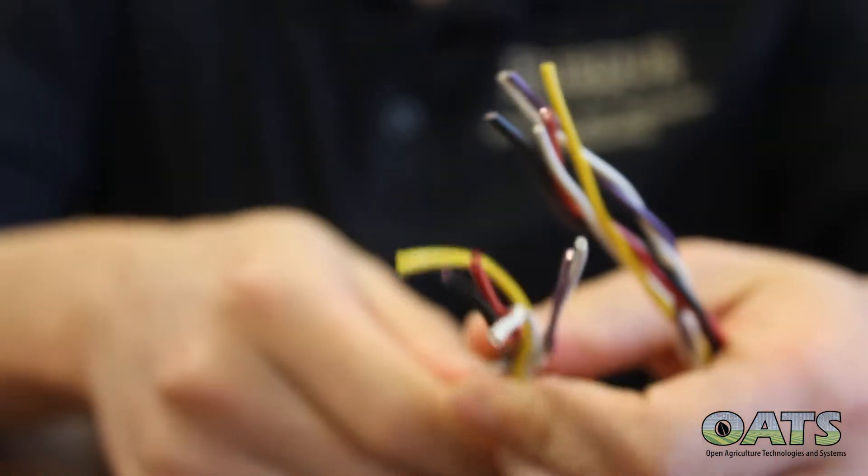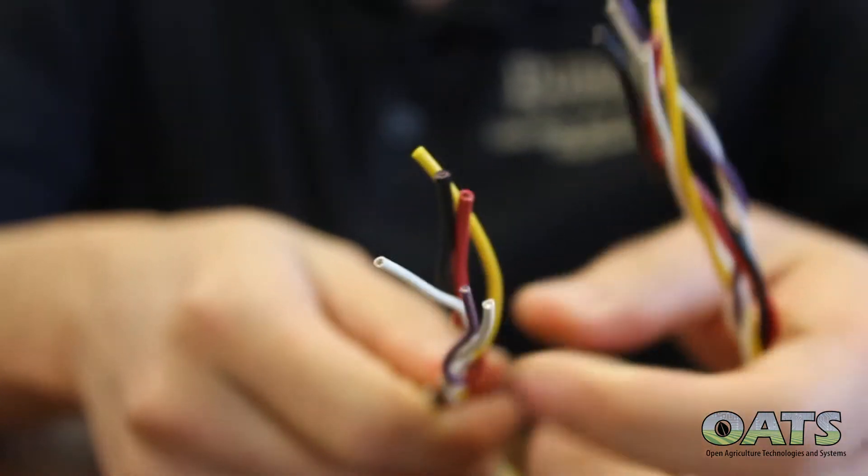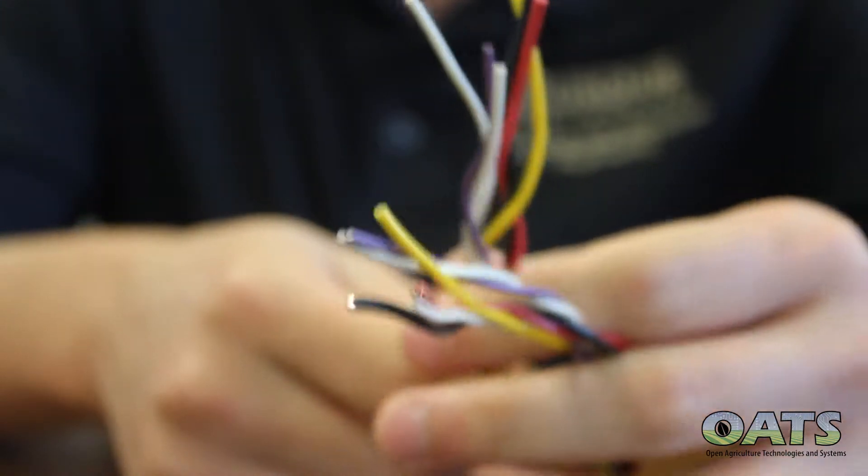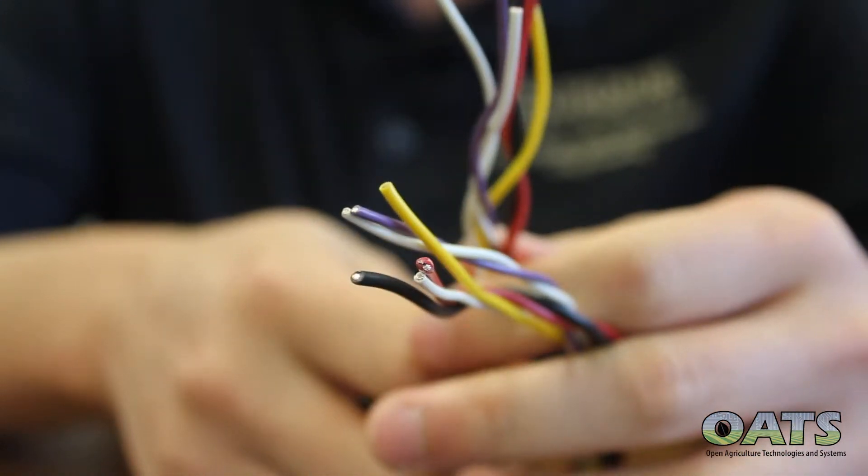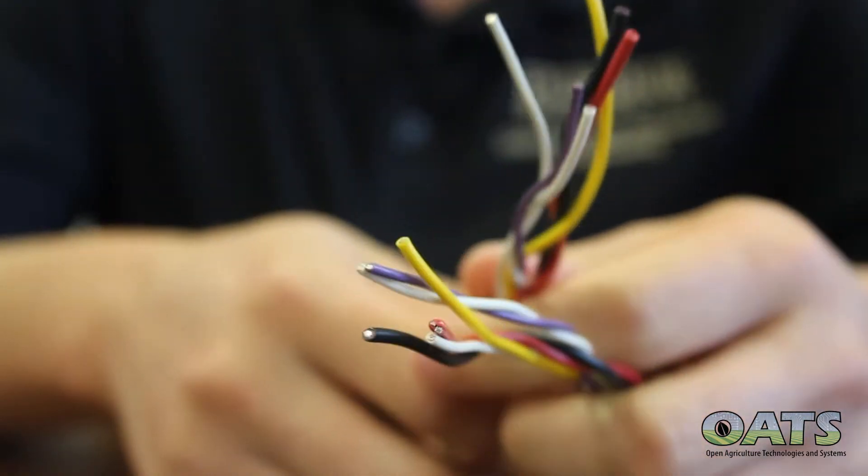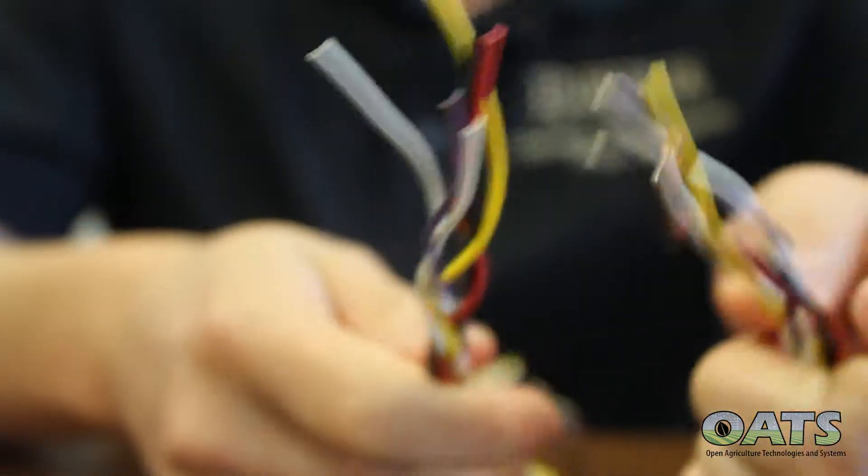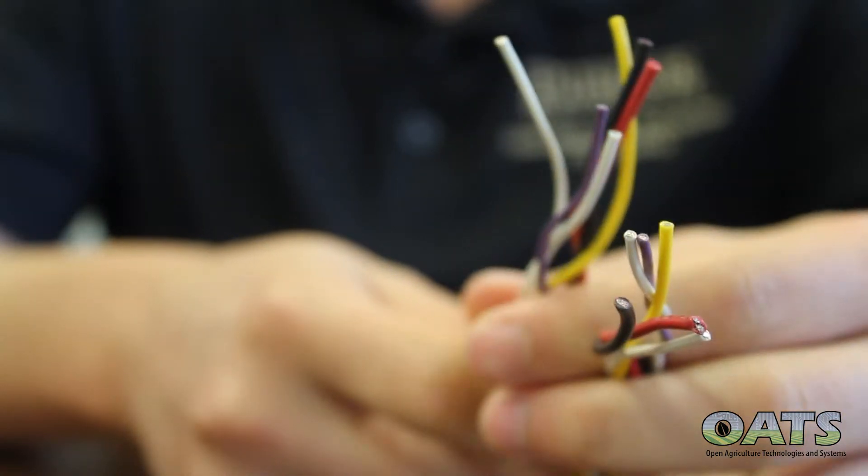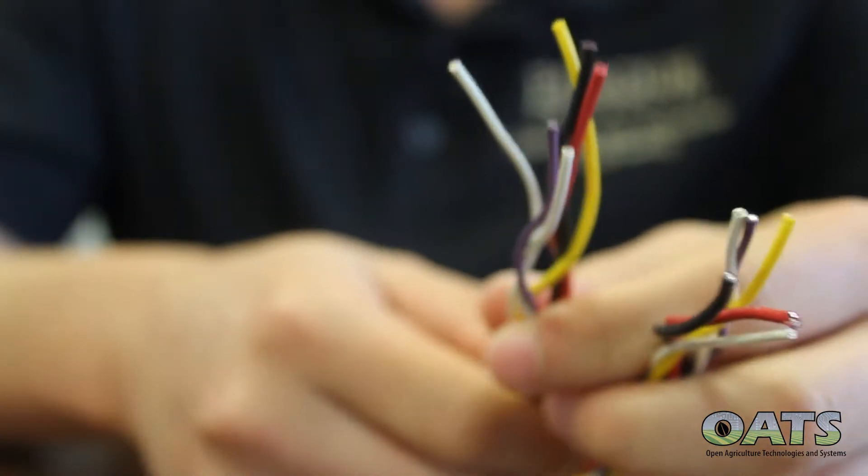So similarly to building the isobus male port, you will need six wires of five different colors. Two of the wires will have the same color because they stand for the CAN load connections for the tractor and implement bus. The length of these wires depends on how long you want your diagnostic cables to be.